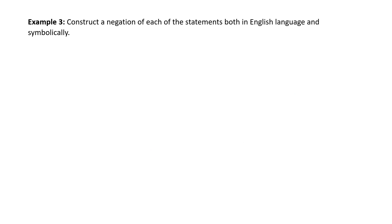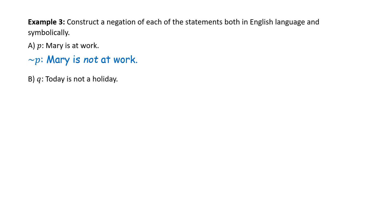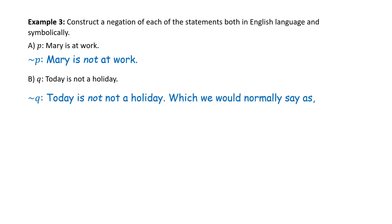Construct a negation of each of the following statements, both in English and symbolically. A: Statement P is 'Mary is at work.' We need to negate that. Symbolically, we put the tilde in front of P, read as 'not P.' In English, we insert the word not: 'Mary is not at work.' Part B: Q is 'Today is not a holiday.' Symbolically, we write tilde Q, read as 'not Q.' To negate, you could say 'today is not not a holiday,' but more naturally: 'today is a holiday.'